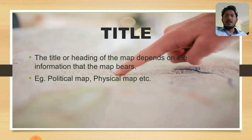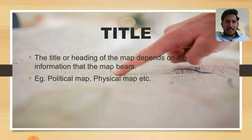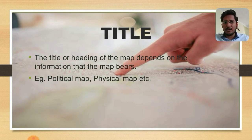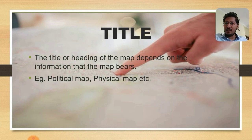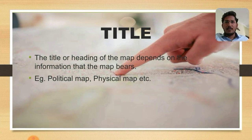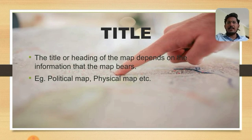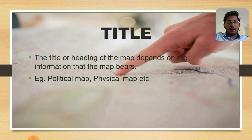The next topic is title. The title tells us what the content of the map is — just like the title of a book or a movie. Examples include political map, physical map, world map, and map of India. A world map is about the world, and a physical map of India explains the physical features of India. The title is very important as it tells us what the map is about.